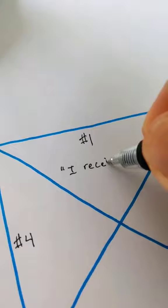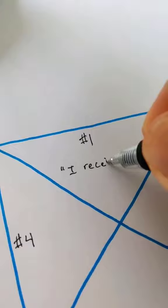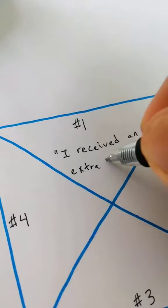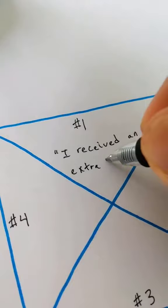In the intention, number one, you're going to write down anything you intend to manifest. And we're going to do an example. I received an extra $10,000, but feel free to write anything that you desire into this intention. It doesn't have to be money.